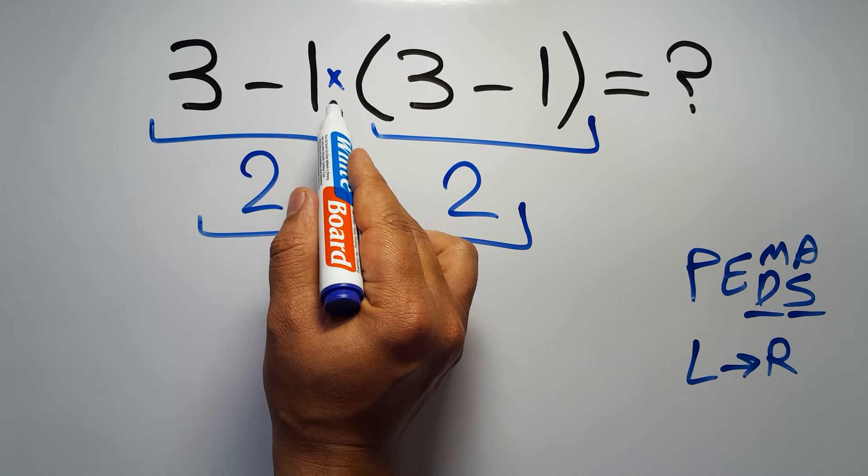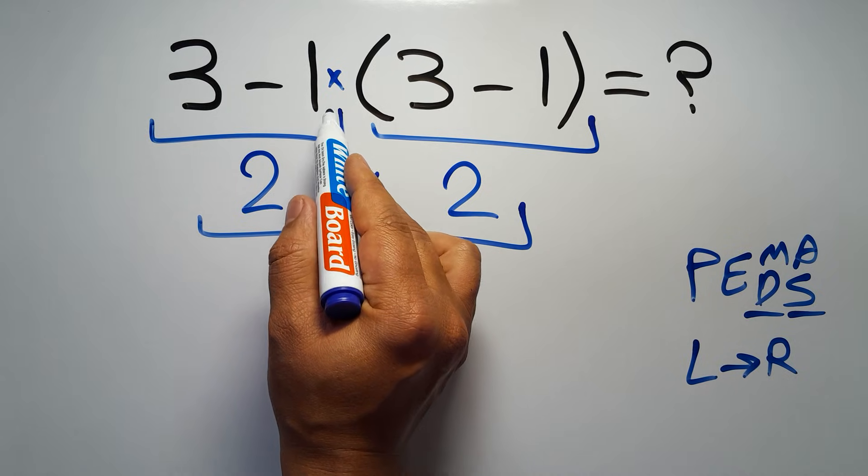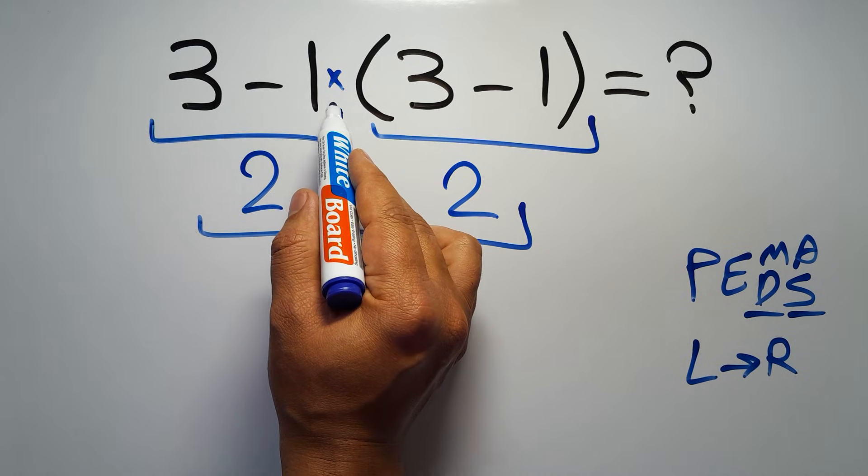Here we have a multiplication because in mathematics when a number is placed next to parentheses it means multiplication, and we usually don't write the multiplication sign for brevity.